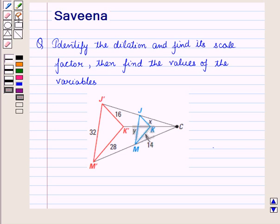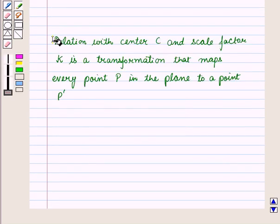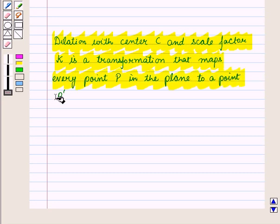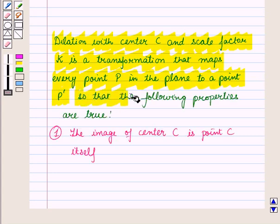Now before solving this question we should know some results. The dilation with center C at scale factor k is a transformation that maps every point P in the plane to a point P' so that the following properties are true.